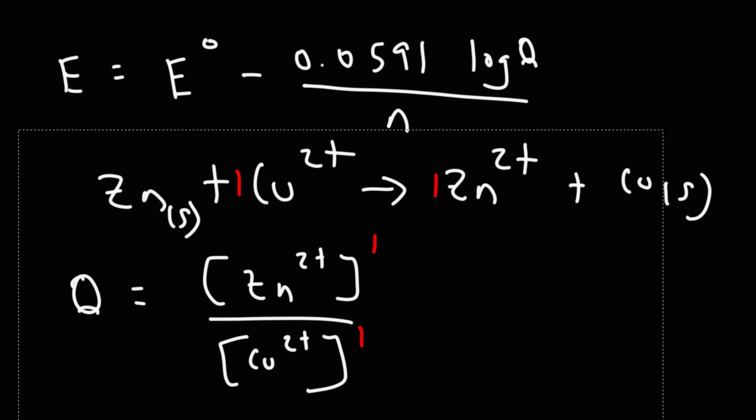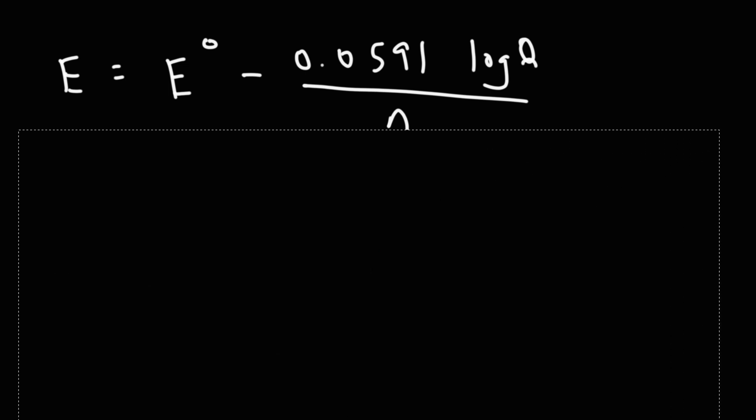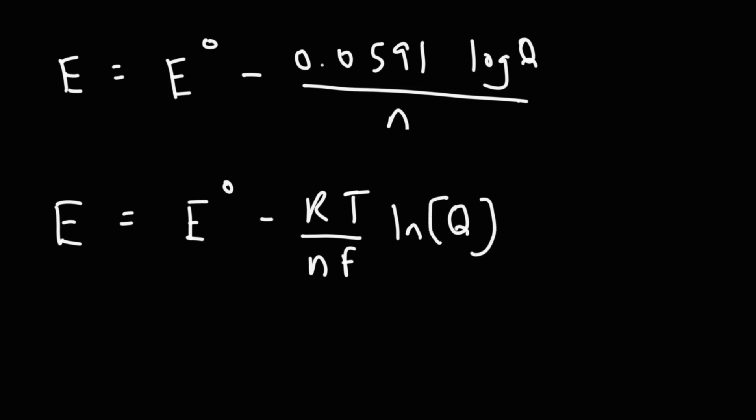Now this reaction works under standard conditions. If the temperature were to change, that would affect the cell potential, and so you would use the other variant of the Nernst equation, which is the standard cell potential minus RT over nF times the natural log of Q, as opposed to regular log of Q. This log has the base 10, this one has base e, where e is approximately 2.71828 and so forth.